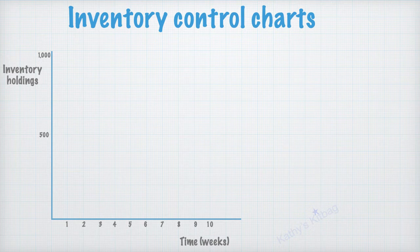So now we'll go on to have a look at some charts. So the starting point for an inventory control chart is the axes. So here you can see on the vertical axis we've got the number of units, the inventory holdings in stock.